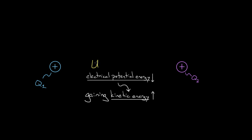Why U for potential energy? I don't know — PE would've made sense too, because that's the first two letters of the words 'potential energy.' But more often you see it written as U with a little subscript E, so that we know we're talking about electrical potential energy and not gravitational potential energy. So that's all fine and good.